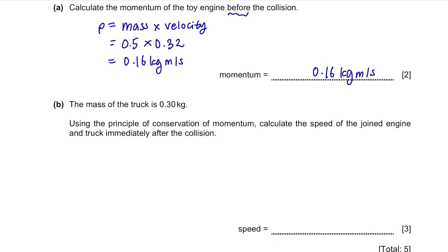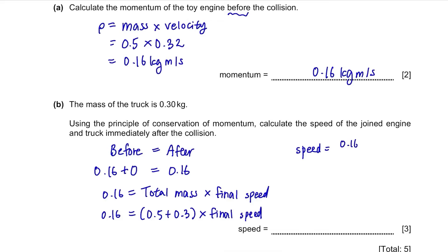Part B. The mass of the truck is 0.30kg. Using the principle of conservation of momentum, calculate the speed of the joined engine and truck immediately after the collision. Now we need to think about the momentum and the speed of both the engine and the truck. Due to the conservation of momentum, the momentum before the collision and after the collision will be the same. The momentum of the engine before the collision was 0.16 and for the truck it's 0 because its velocity was 0. So the momentum after the collision will be 0.16 as well and this should equal to the total mass multiplied by final speed. The total mass is the sum of the mass of the engine and the truck which is 0.5 plus 0.3. So to find the speed, divide 0.16 with 0.8 and you will get 0.2m per second.